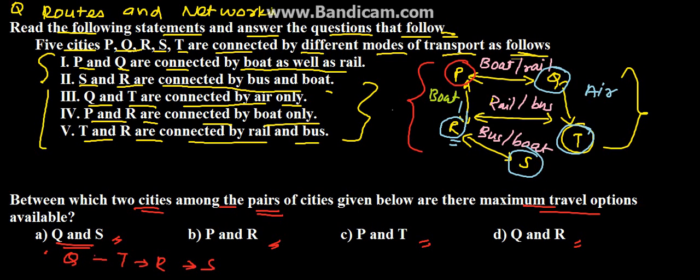So Q, T, R, and S. Now here if we see from Q to T, this is Q and this is T, we will take air.